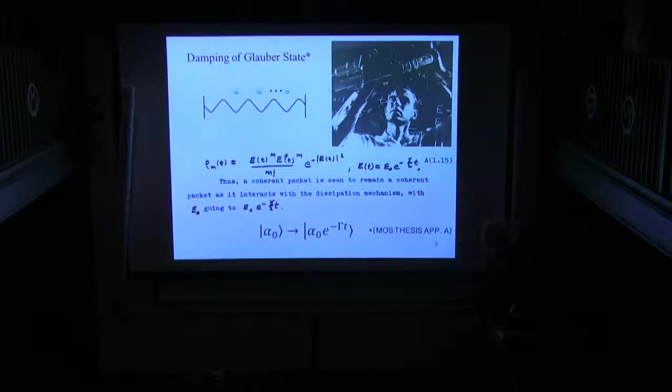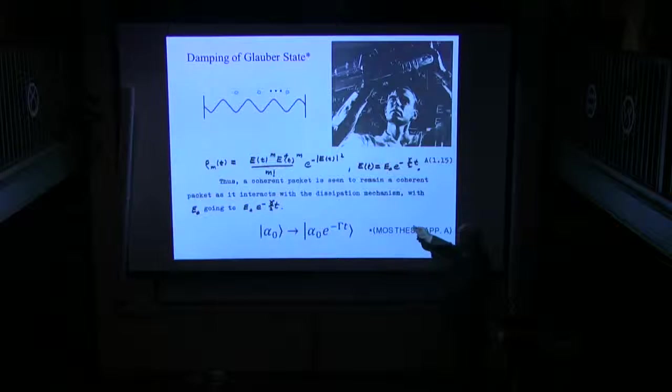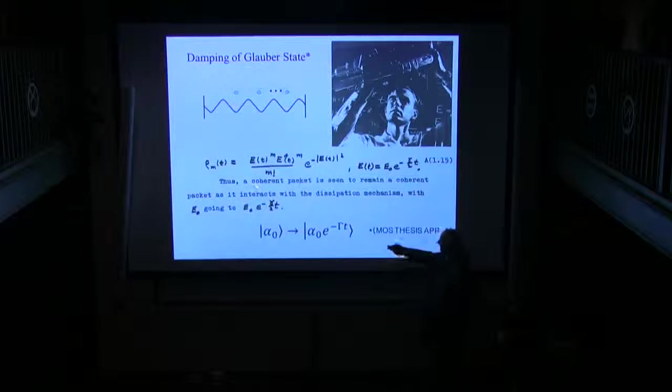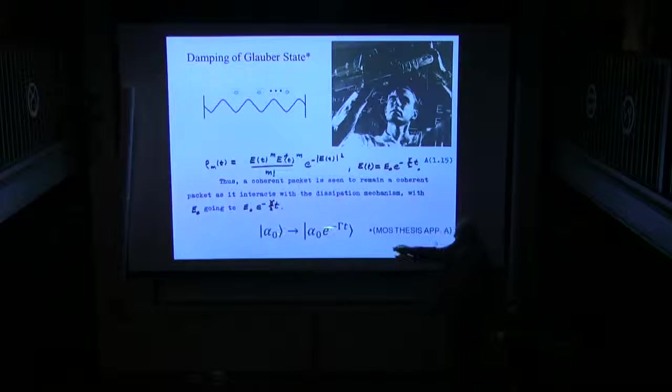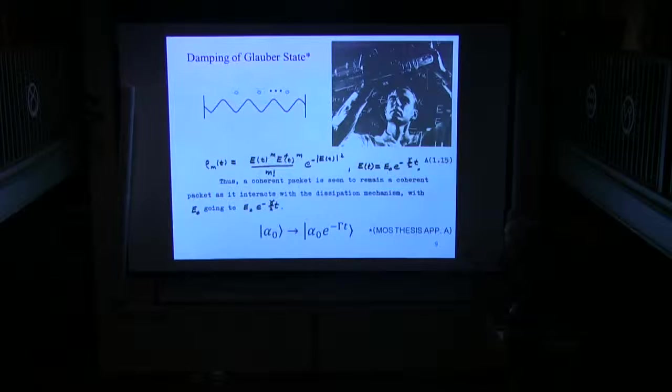I always worked in the number representation, going back to the coherent state at the end, because there was nobody around to teach us differently at that time. So what I found over the summer was that if I started with a radiation field and atoms, lots of atoms on the ground state, and I look at the dissipation associated with that kind of configuration, that a coherent state is seen to remain a coherent packet as it interacts with the dissipation mechanism with the amplitude going to E zero, E to the minus.